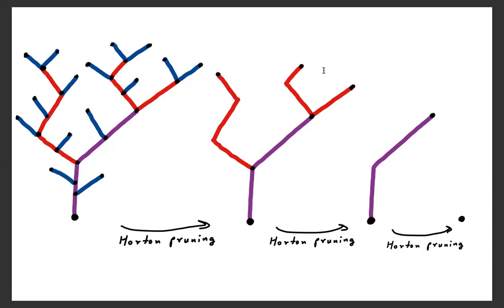In the second Horton pruning, the three leaf segments are removed and series reduction merges the two edges into just one. So the tree consists of just one leaf, and finally the third Horton pruning eliminates the rest of the tree, leaving only the root.